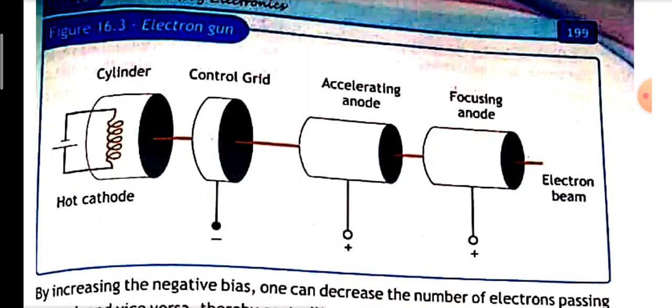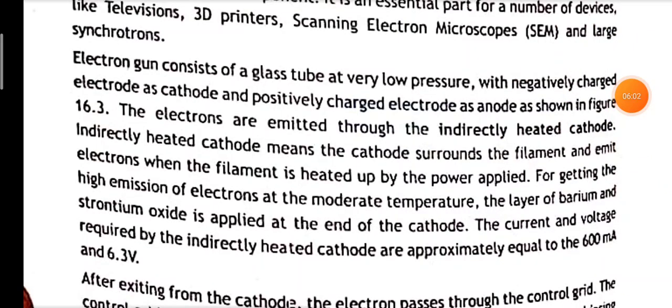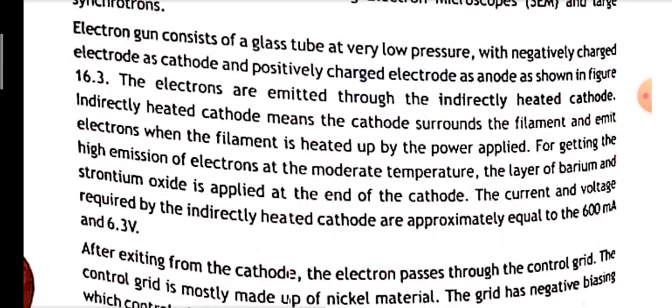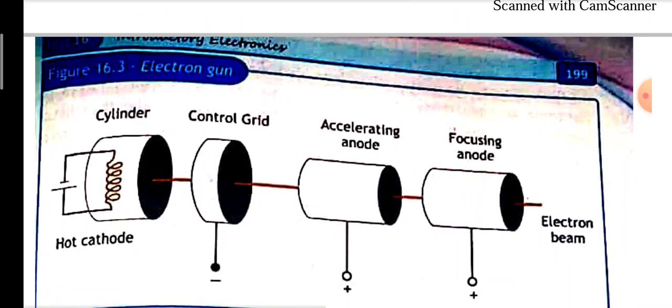Focusing is done to focus the electron beam. The electron gun consists of a glass tube at low pressure with negatively charged cathode and positively charged anode electrodes. Electrons are emitted through an indirectly heated cathode.